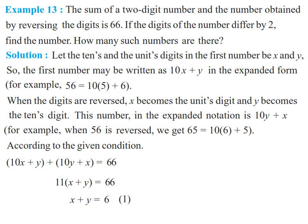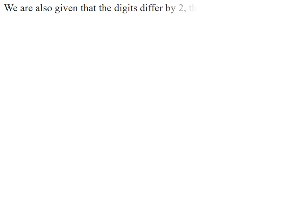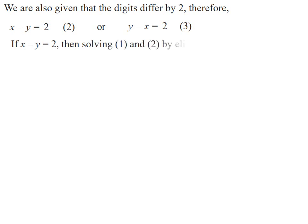For the second condition, the digits differ by 2. The difference between the two digits is 2. Two sub-cases arise: x minus y equals 2 (equation 2) or y minus x equals 2 (equation 3). Taking the first sub-case, x minus y equals 2, and solving equations 1 and 2 together by elimination: the first equation is x plus y equals 6 and the second is x minus y equals 2. The coefficients of both x and y are numerically equal.